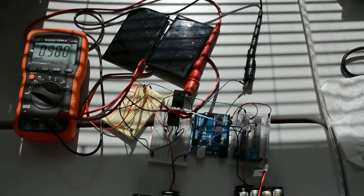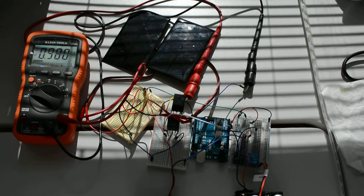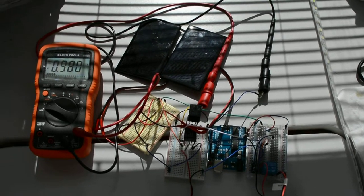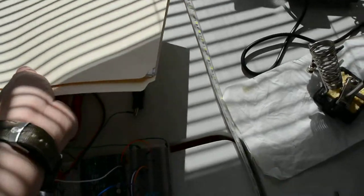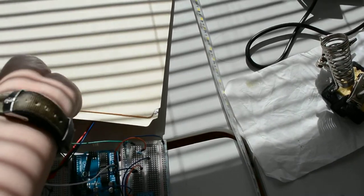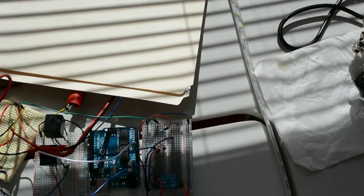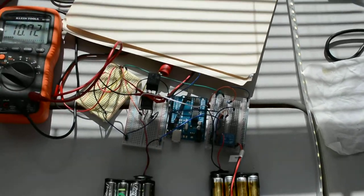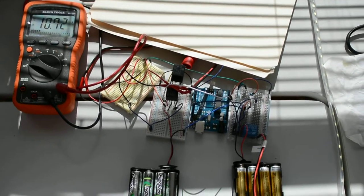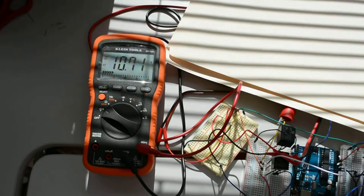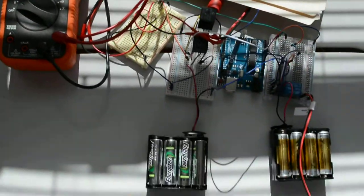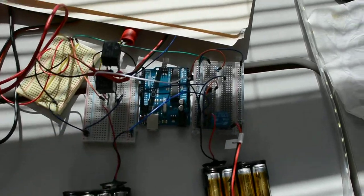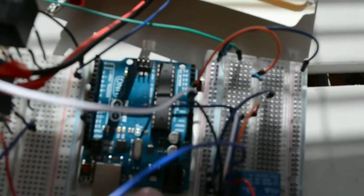Now I'm going to simulate nighttime and let's see what happens. I'm going to cover the solar panel. You can see the voltage jump to 10.7 volts because now the battery is powering the Arduino.